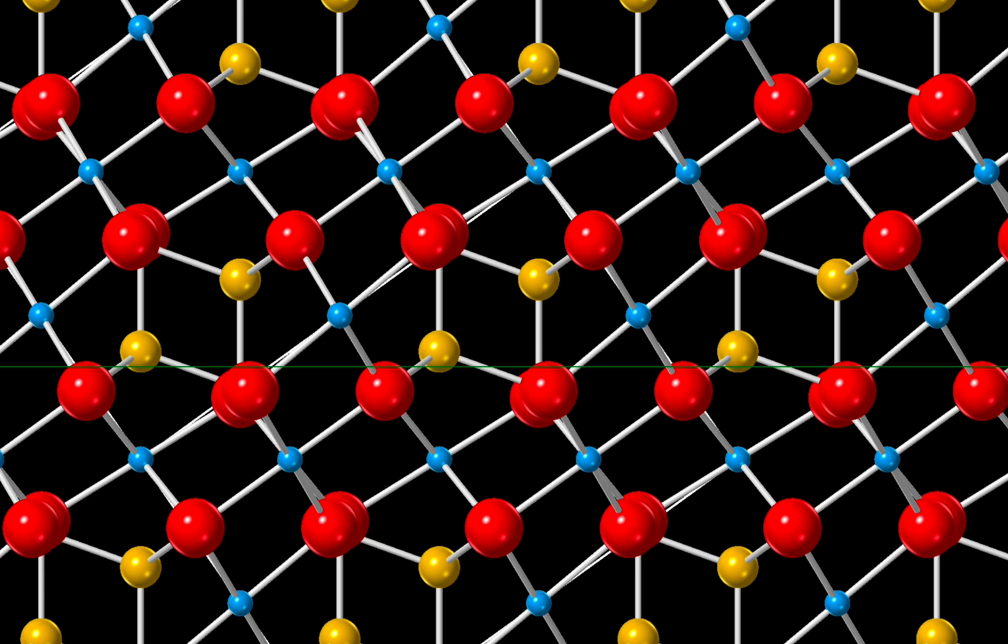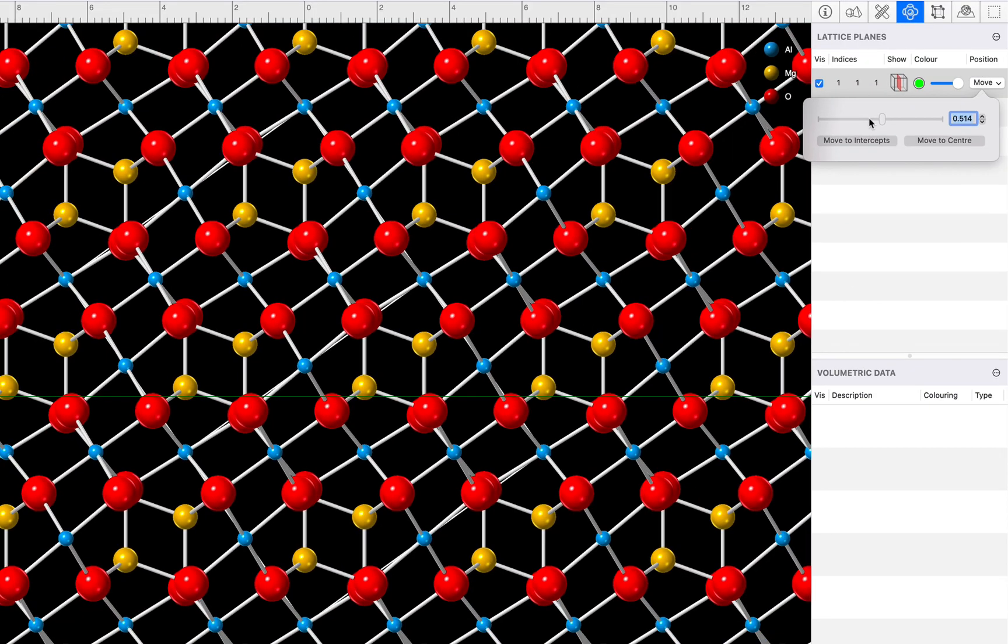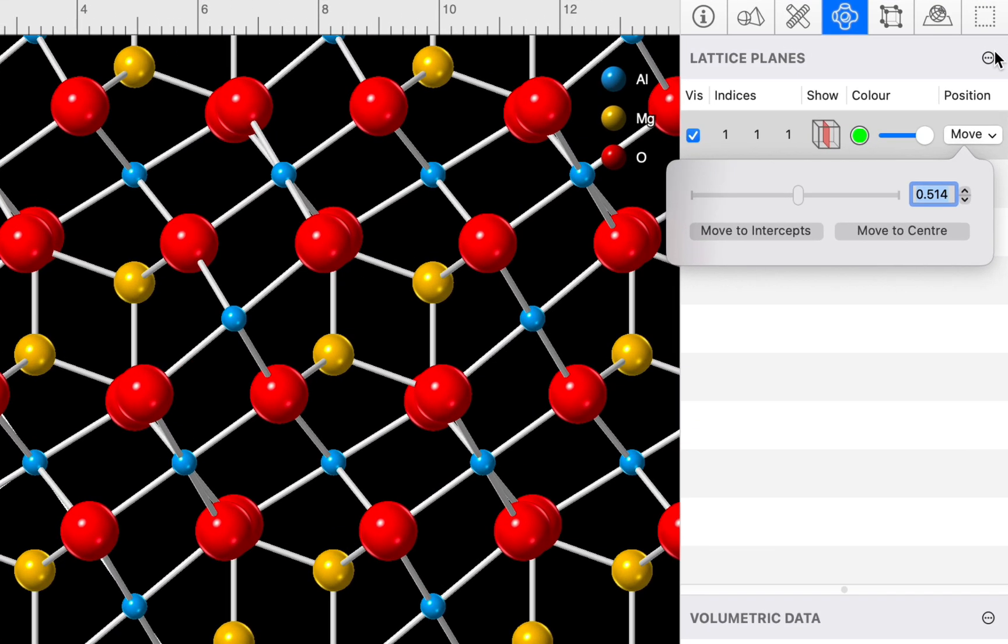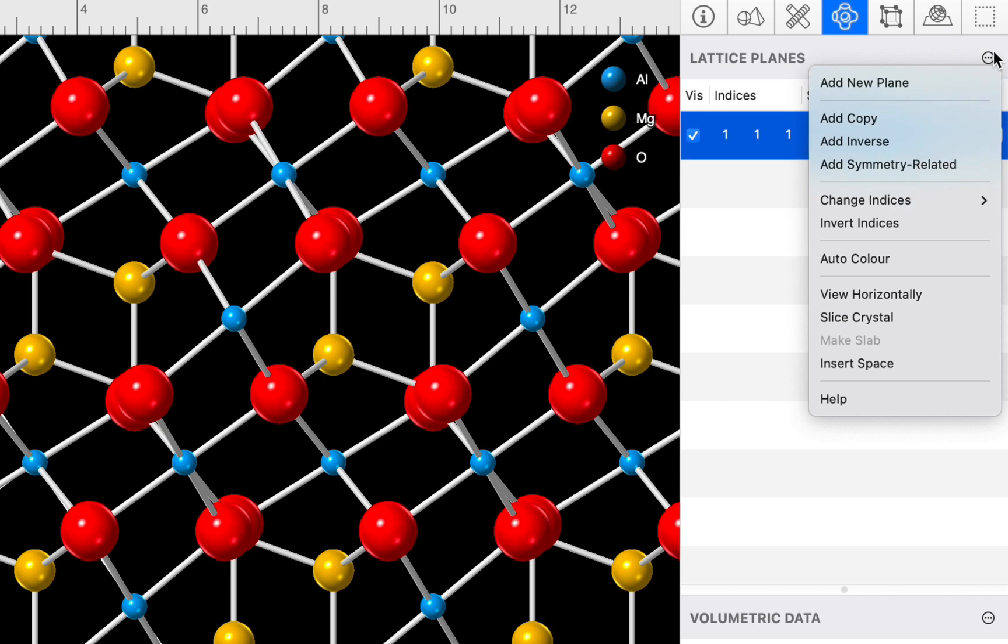Now that we've defined where we want our surface to be, it's time to make it visible. To do this, we'll use the slice crystal command, which we can find on the actions menu up here.